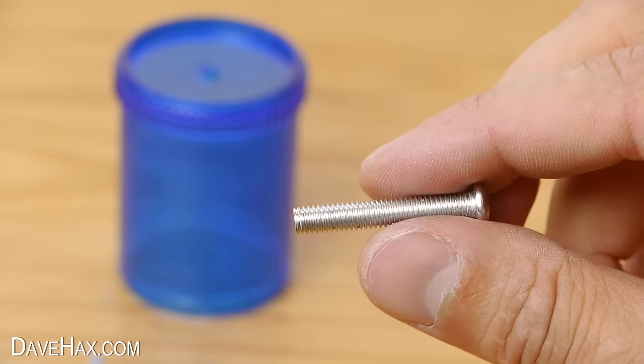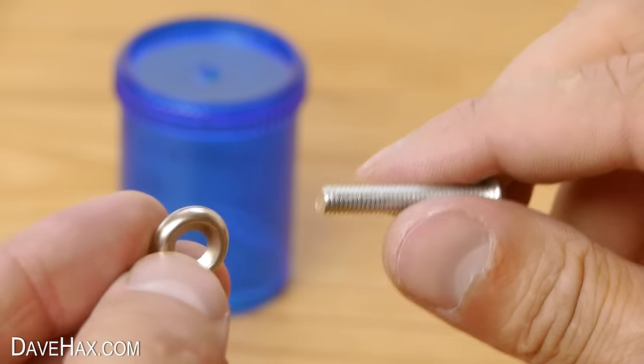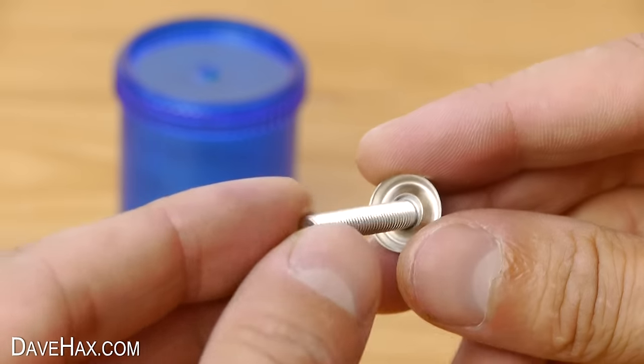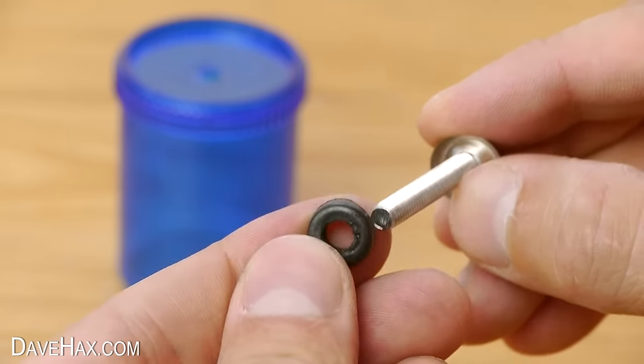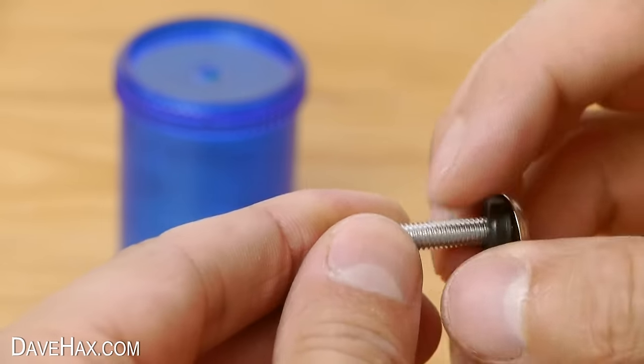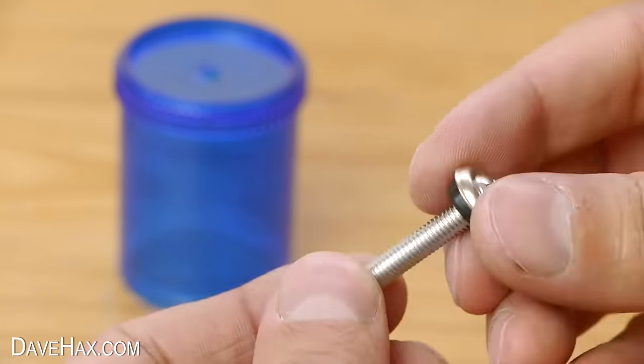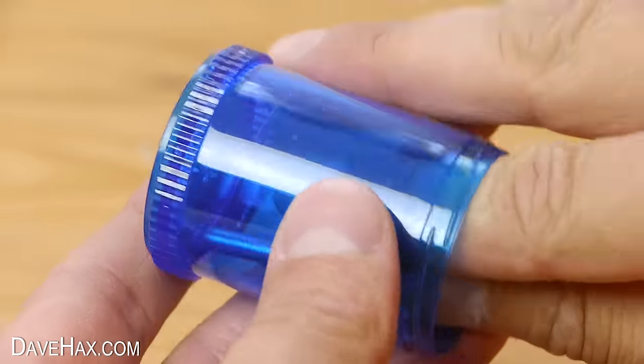Next take your bolt, slide on a metal washer. And I'm using a rubber washer to help the bolt grip the sharpener without damaging it. Slide this through the hole in the sharpener like this.